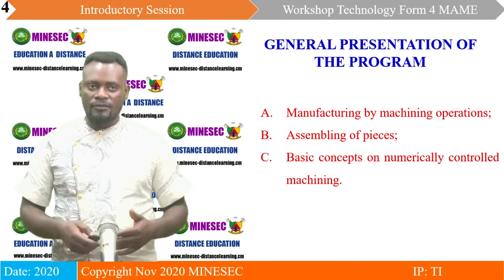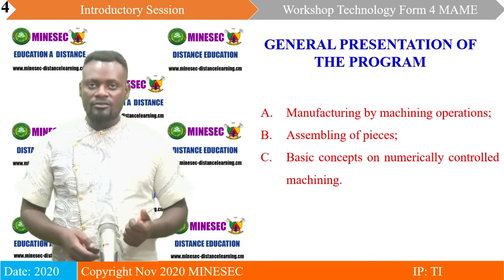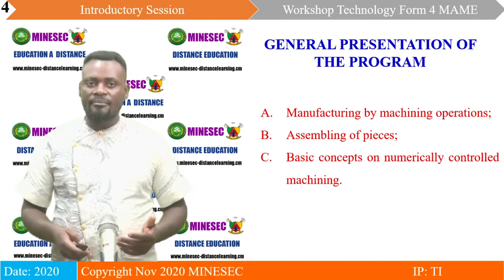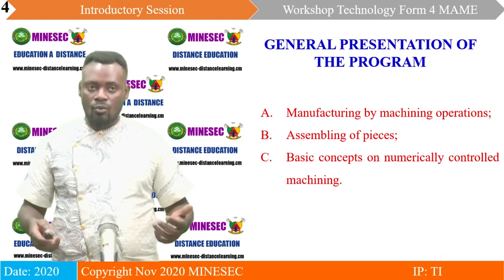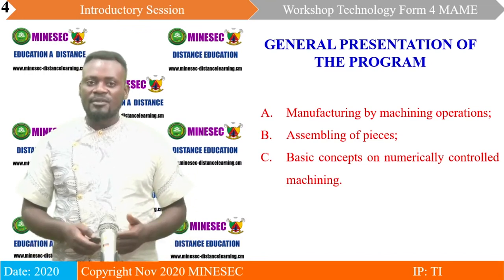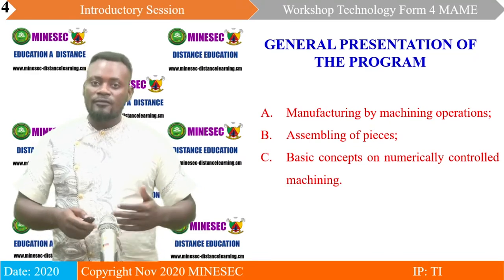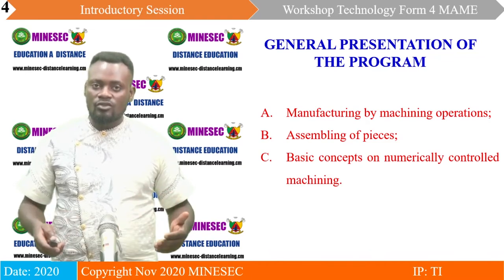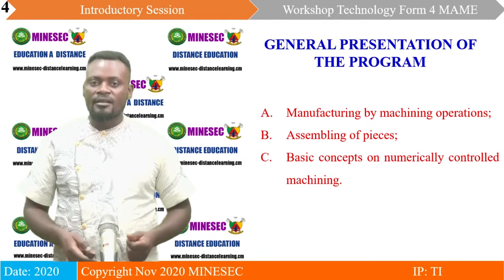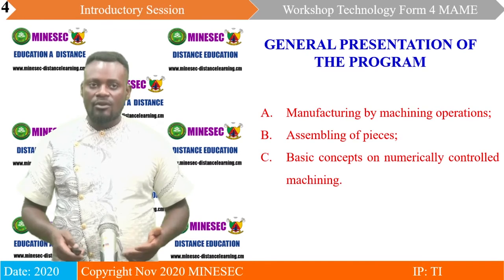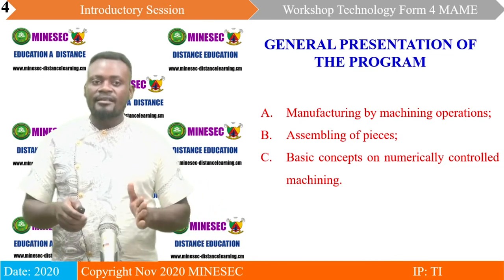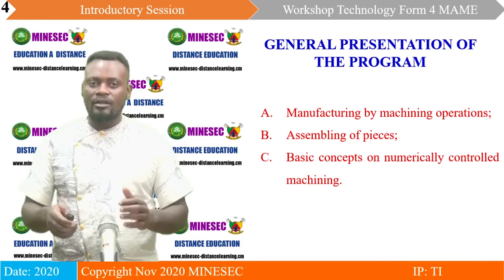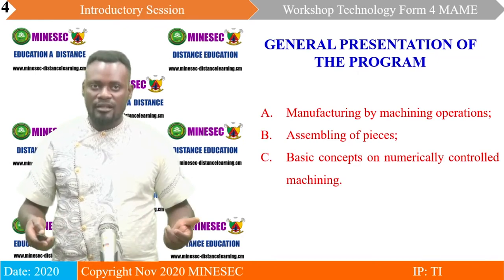Under the general presentation of this module, there are three different learning sequences. The first is manufacturing by machine operations — using the different machines found in our workshops to realize different parts or workpieces. The second is assembling of these pieces, which may use fusion welding, screws and nuts, or riveting. The third sequence covers basic concepts on numerically controlled machining, similar to the first but with a computer that helps carry out the programming, rather than using our hands as in machining operations.